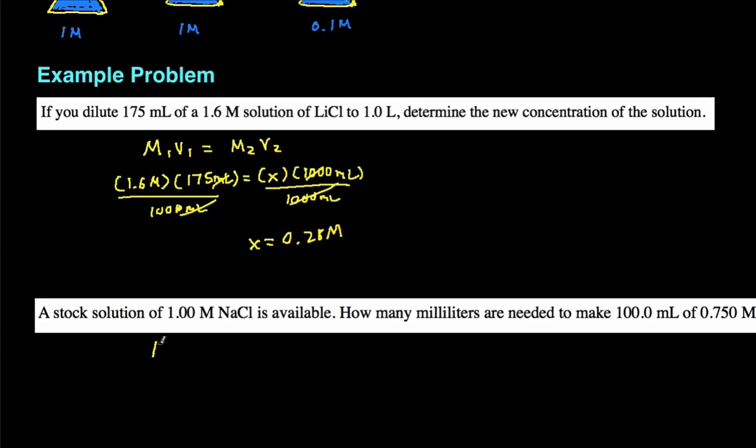So again, we're working on dilution. So let's start with M1V1 equals M2V2. And let's see what our original molarity and volume is. Our stock solution has a molarity of 1.00 molar. So that's going to be our M1, 1.00 molar.